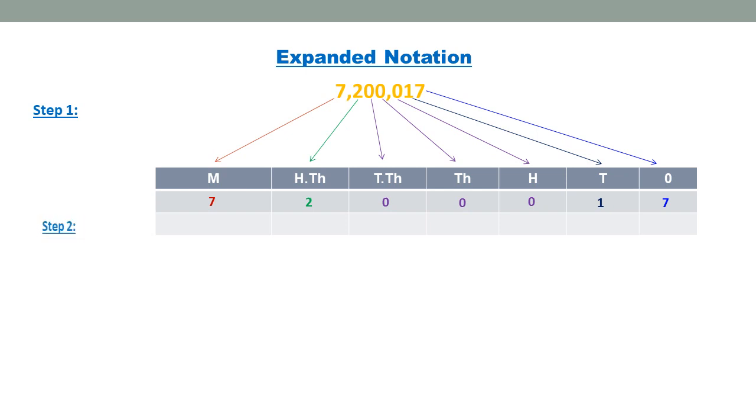Step 2: We find the place value of each digit. The place value of 7 is 7 million. The place value of 2 is 200,000. The place value of 1 is 10, and lastly, the place value of the last digit 7 is 7.